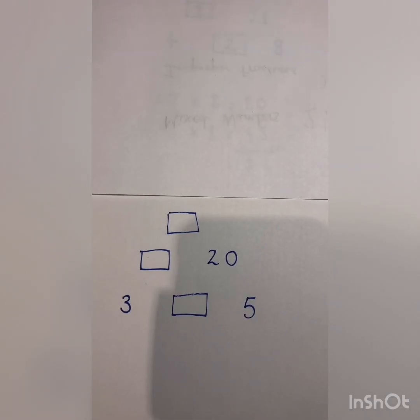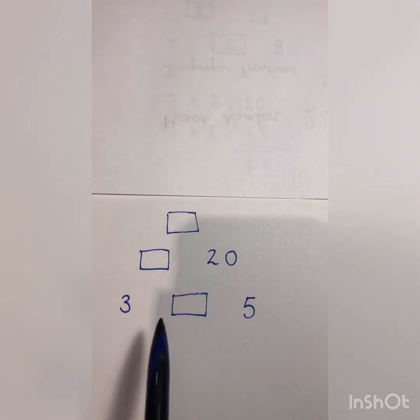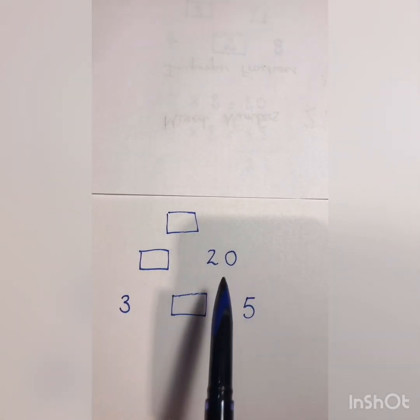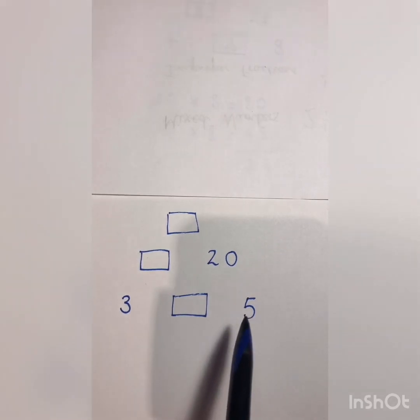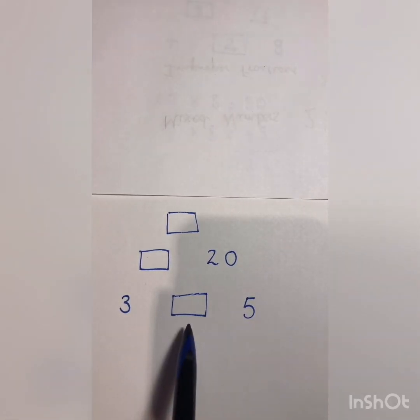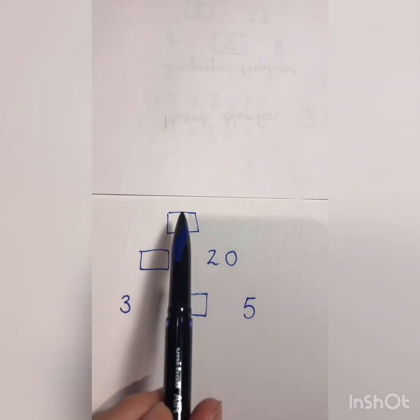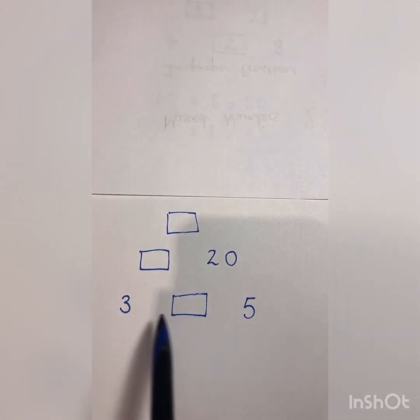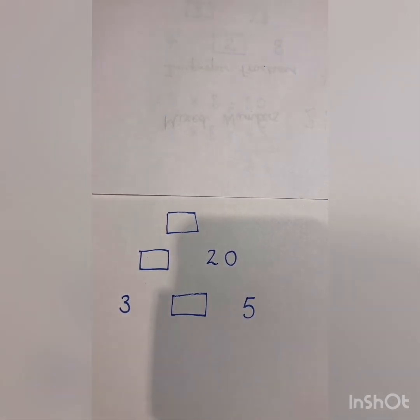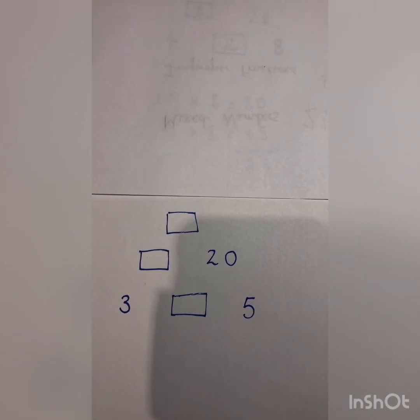I've just shown you something very similar to this one, so I'd like you to have a look at that multiplication pyramid and try to work out how you fill in the missing numbers. Always start lower down if you can, and try to look at the numbers to help you. Have a go — press pause, and then have a listen afterwards.